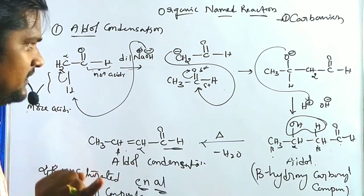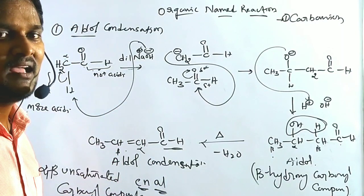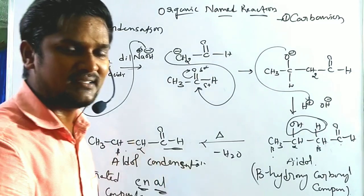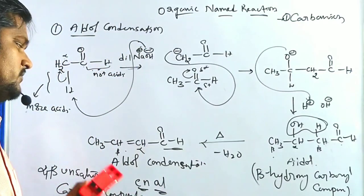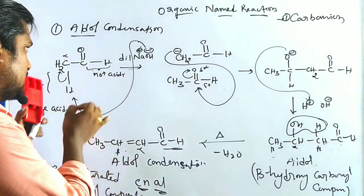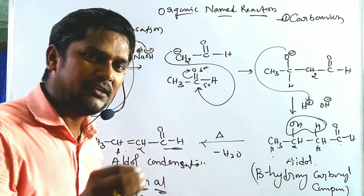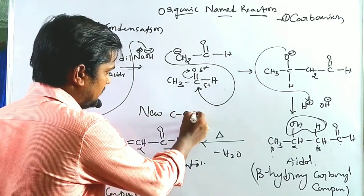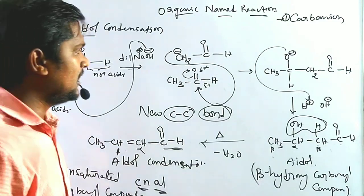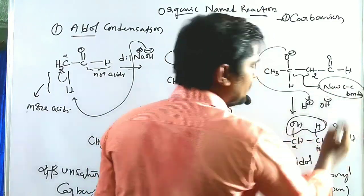In aldol condensation, key terms include: base (abstracts a proton from the acidic position), acidic position (a position that readily donates a proton), and condensation (loss of small molecules during reaction). The carbanion is the reactive intermediate. The main purpose of aldol condensation is the formation of a new carbon-carbon (C–C) bond.